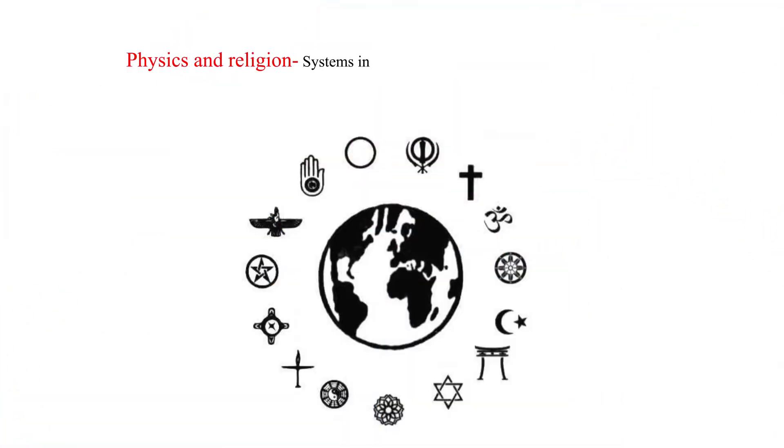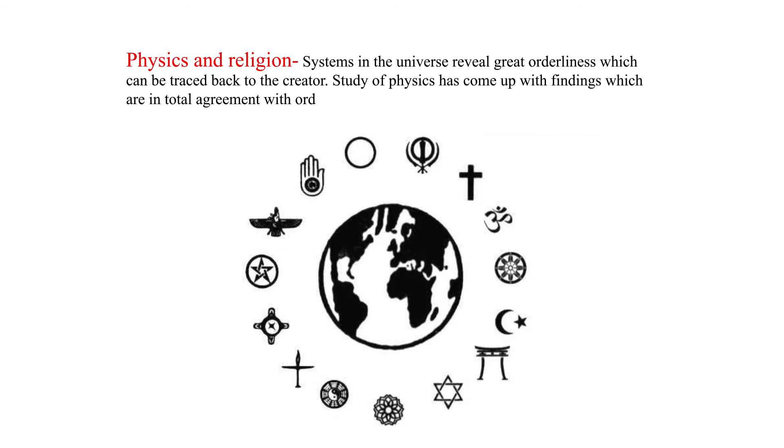Physics and religion. Systems in the universe reveal great orderliness which can be traced back to the creator. Study of physics has come up with findings which are in total agreement with orderliness. Matter can be reduced to nothing scientifically; the reverse is true which confirms that matter was created from nothing by God.